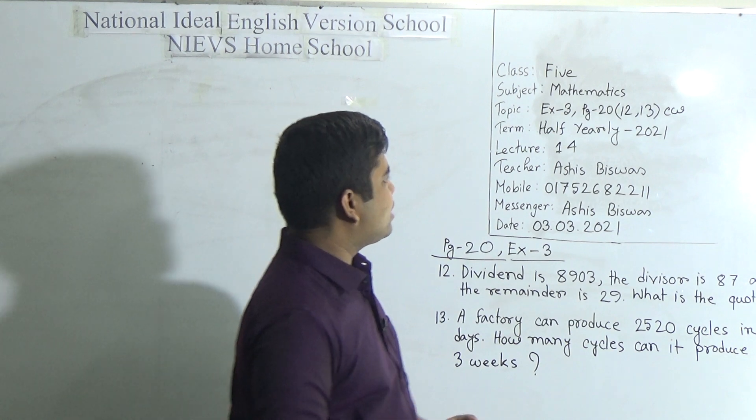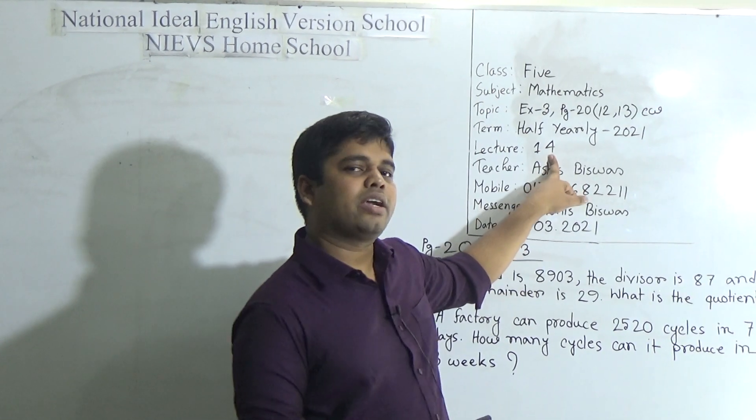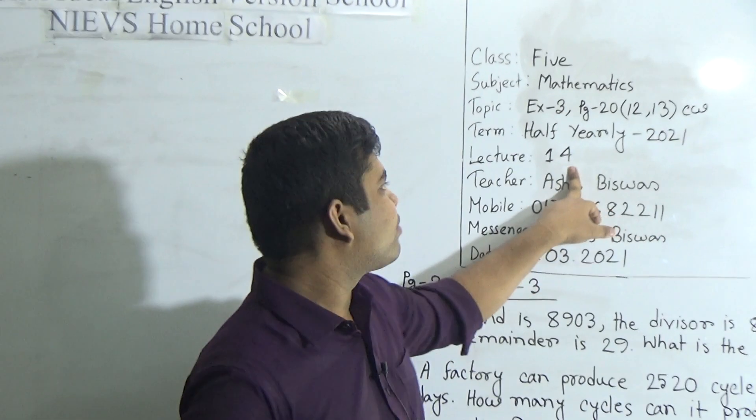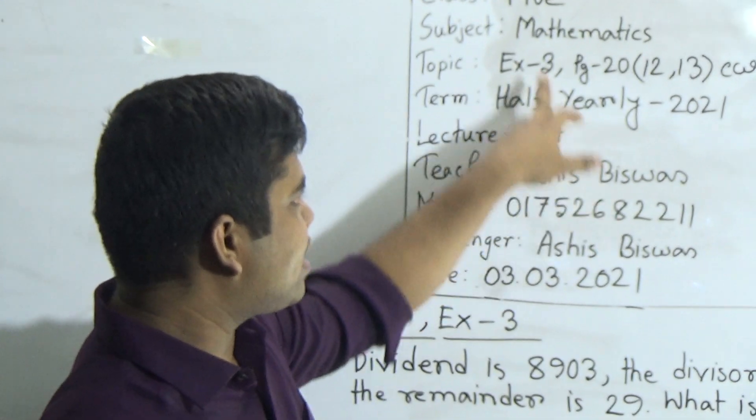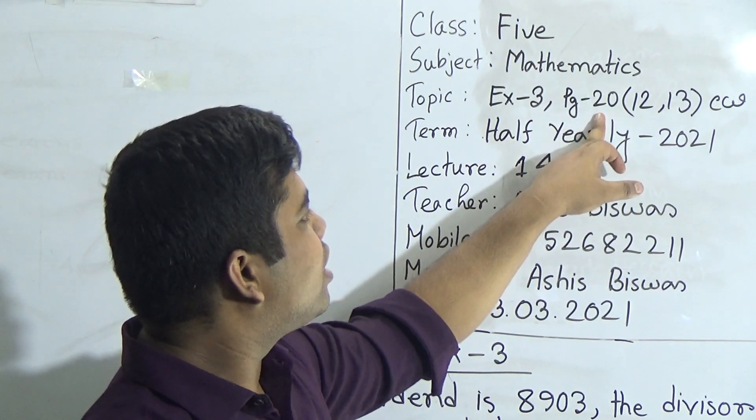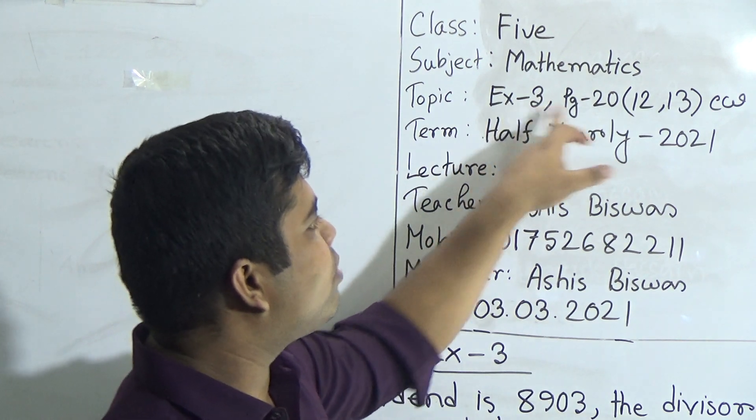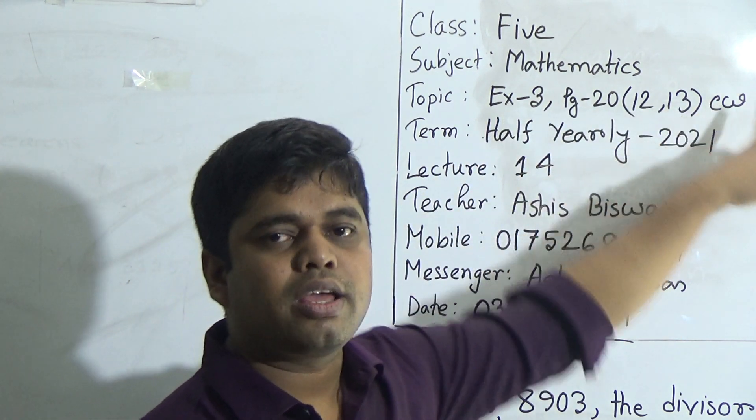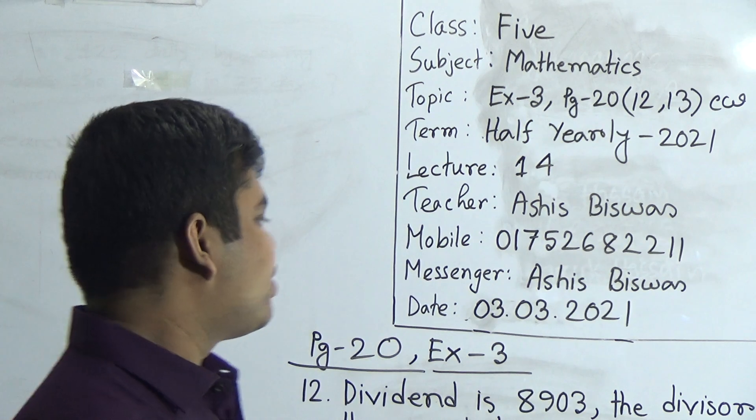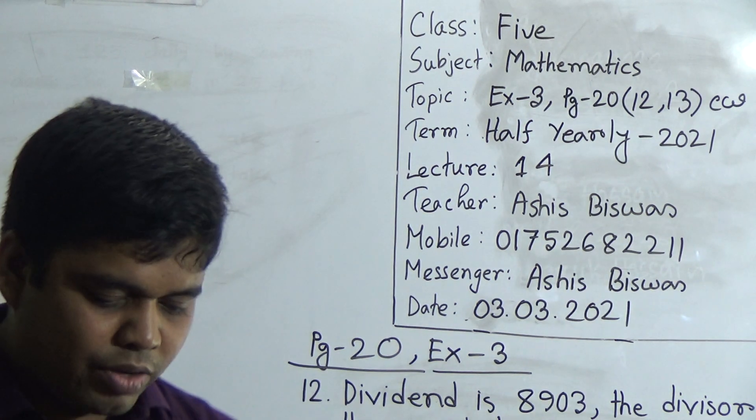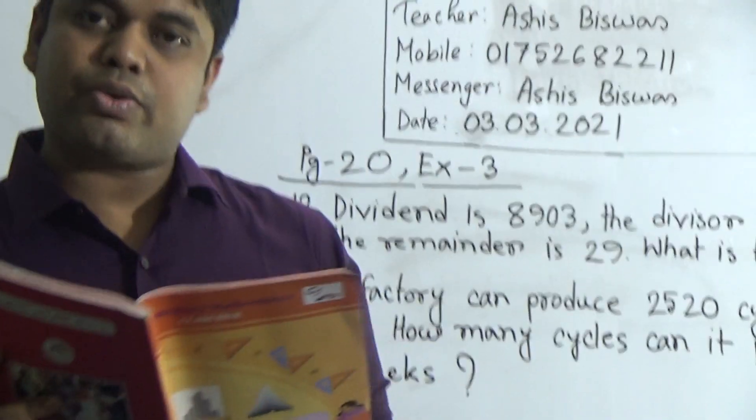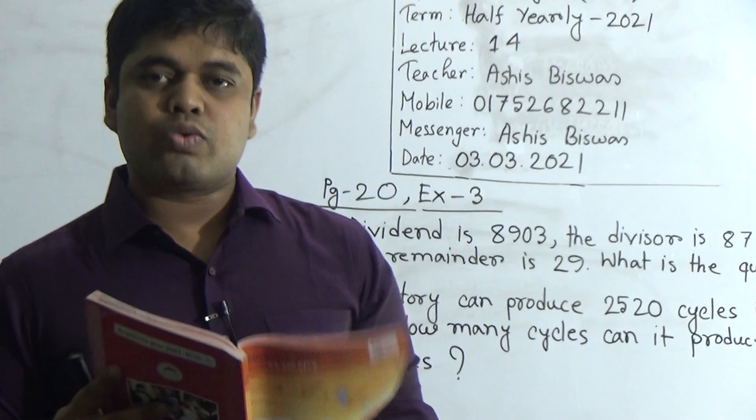Today I am going to take a math class for the students of class 5. So my dear students, let us start our class. Today is our lecture number 14 and there is no HW today. Our today's topic is exercise 3, which is on page number 20. From exercise 3 we shall solve question number 12 and 13 as your CW.